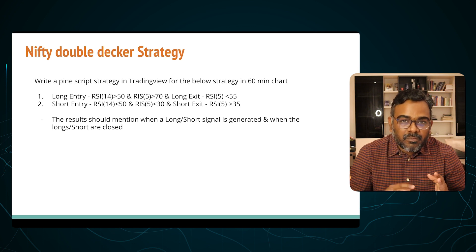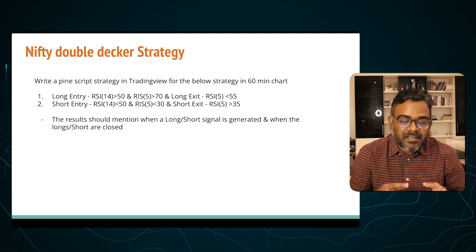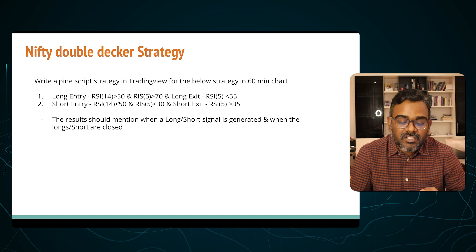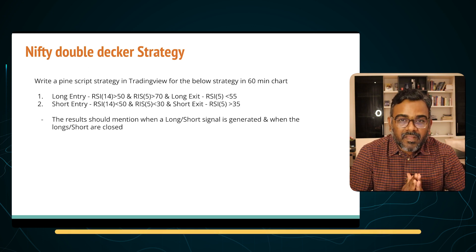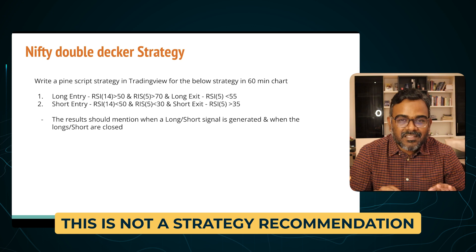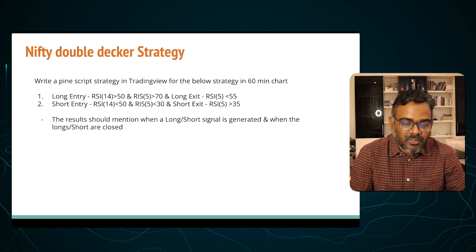The strategy rules are: long entry when RSI 14-period is greater than 50 and RSI 5-period is greater than 70, and we exit long positions when RSI 5 is less than 55. Short entry is when RSI 14 is less than 50 and RSI 5 is less than 30, and we exit short positions when RSI 5 is 35. I'm not commenting on the performance of the strategy — I'm just showing whether Pine Script can code the strategy from these simple rules.